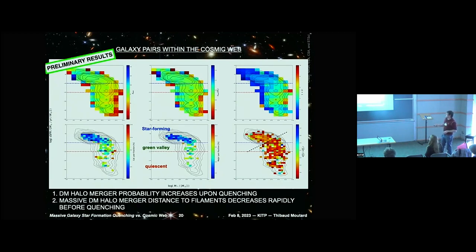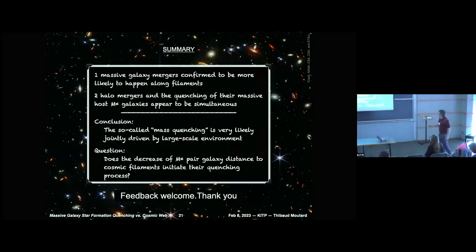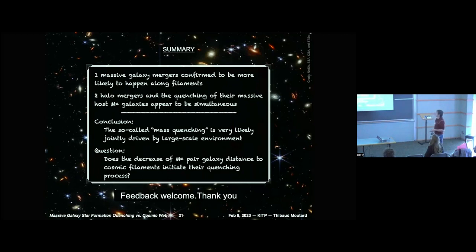Two takeaways from these diagrams. First, dark matter halo mergers — traced by galaxy pairs — increase upon quenching, quite simultaneously. Second, there seems to be a decrease in the distance of pairs versus other galaxies before quenching, which may be a subtle effect to check. The main result is really linking mergers to quenching: you cannot say all M-star galaxies that quenched went through a halo merger, but if you have a halo merger for these galaxies, they will be quenching.